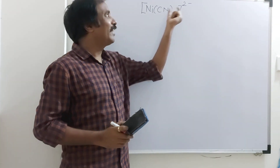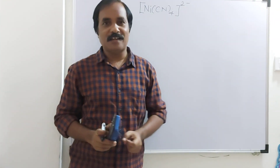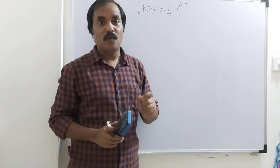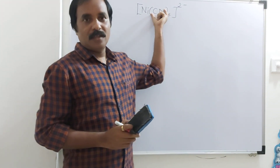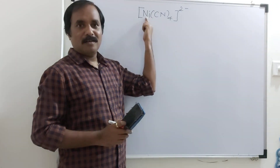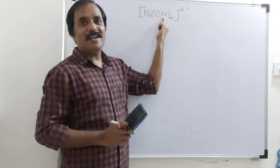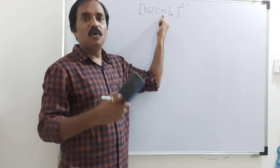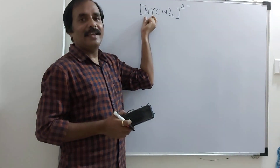There is a negative charge on the square bracket because three types of complexes are there: cationic complex, anionic complex, and neutral complex. So here it is an example of an anionic complex. The coordination number of nickel here — the ligands are CN⁻, and there are 4 ligands. CN⁻ is a monodentate ligand, so the coordination number of nickel is 4.